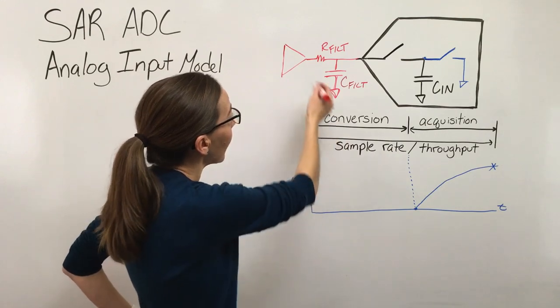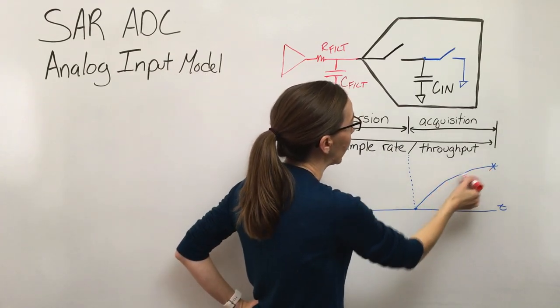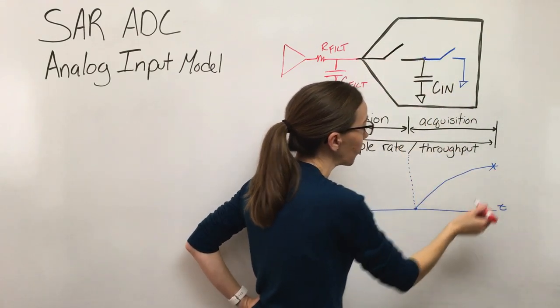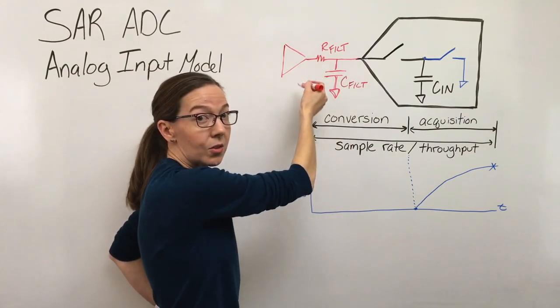But a side effect of this RC filter is it's also going to limit how quickly we can settle from this charge redistribution that occurs. So what we need to be able to make good design decisions about this